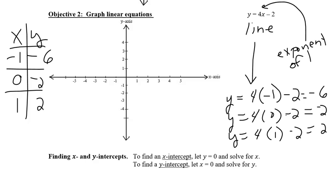Then we would plot these points. So I go negative one, negative six, which is down here. It actually didn't have a tick mark. And then zero negative two is right here. And then one positive two is right here. When you connect those three points, you will have your straight line.